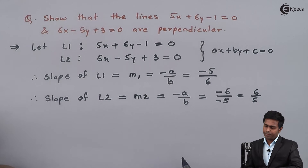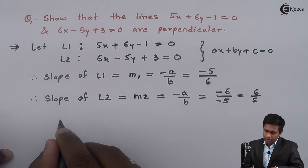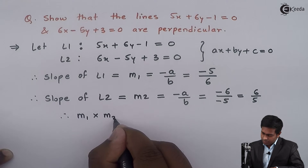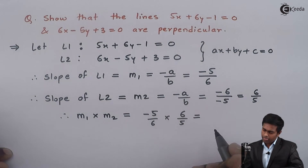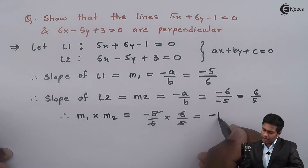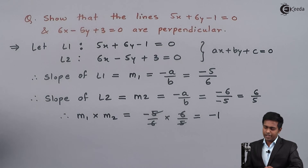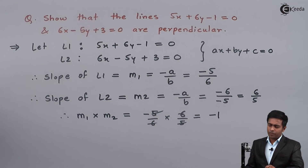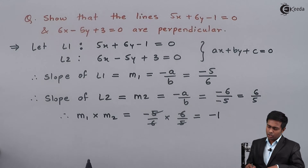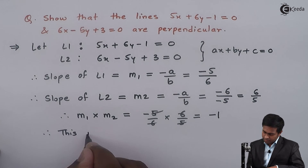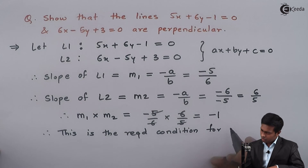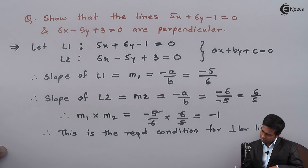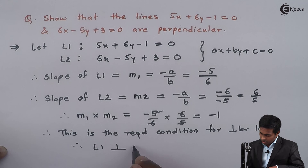The slope of line L2 is 6 upon 5. Now if we multiply M1 and M2 — that is, the slopes of line 1 and line 2 — we get minus 5 by 6 into 6 upon 5. Cancelling 6 and 5, we get minus 1. Since the multiplication of the two slopes is minus 1, this is the required condition for perpendicular lines. Therefore, line L1 is perpendicular to line L2.